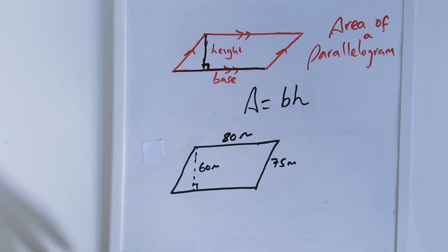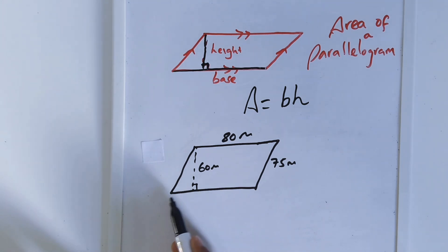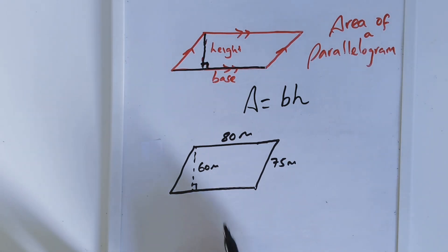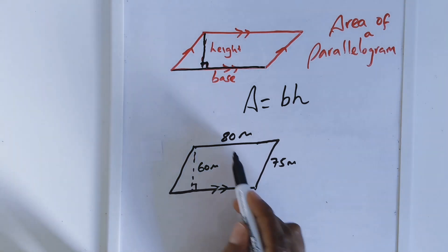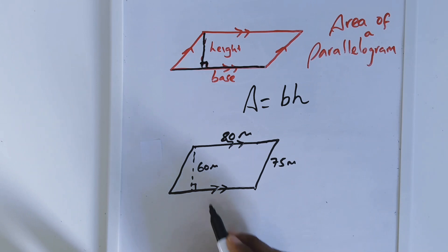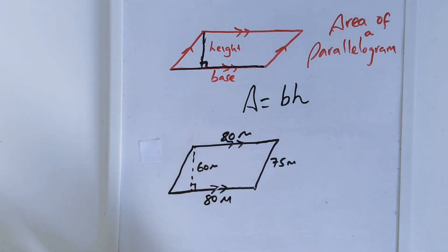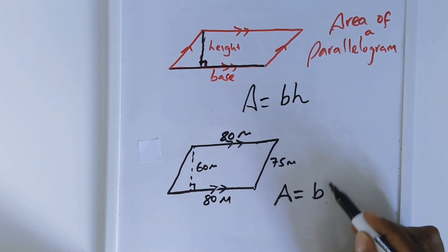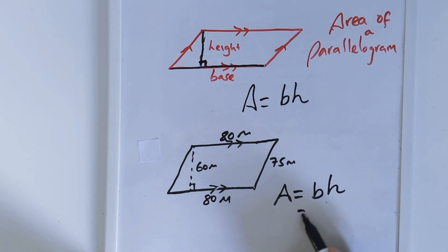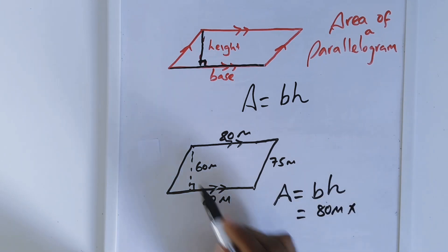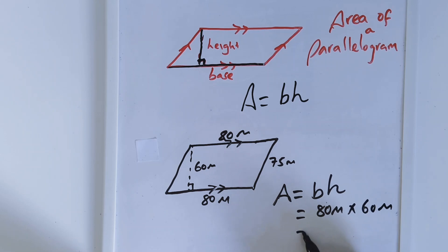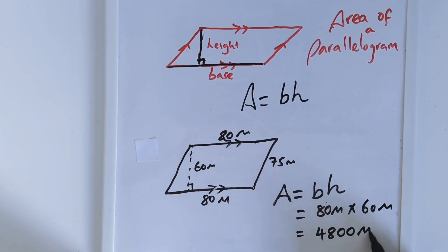Let us do one more example finding the area of a parallelogram. In this diagram, the base is not given on the bottom. But opposite sides of a parallelogram are equal, so because this side is 80 m, the bottom side must also be equal to 80 m. The area equals base times height: 80 m times 60 m, which gives me 4800 m squared.